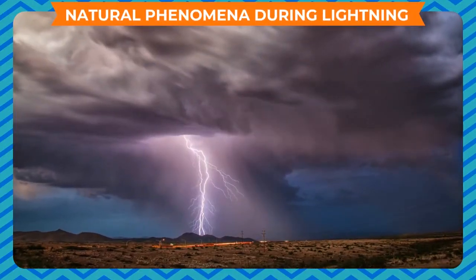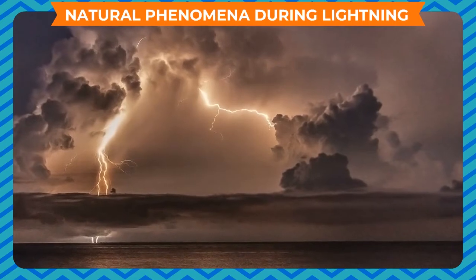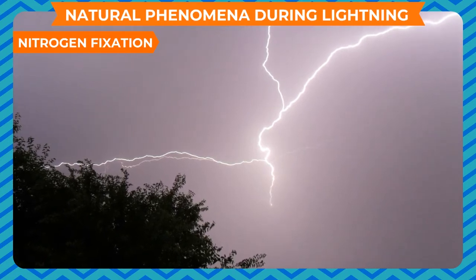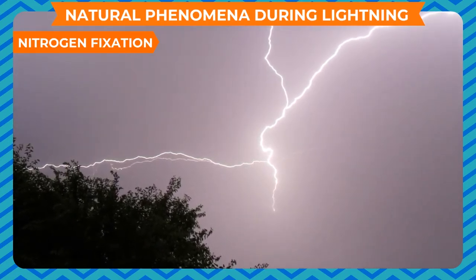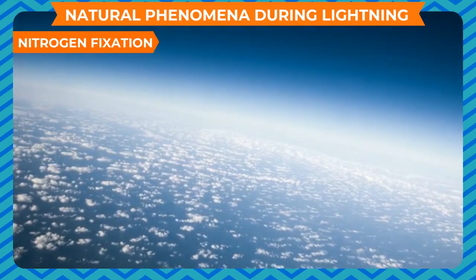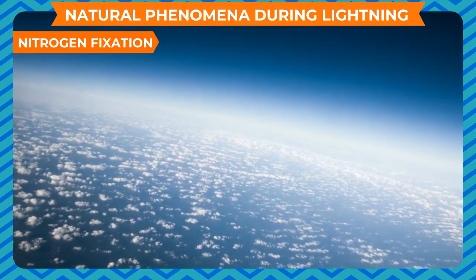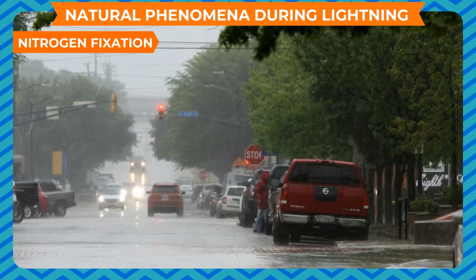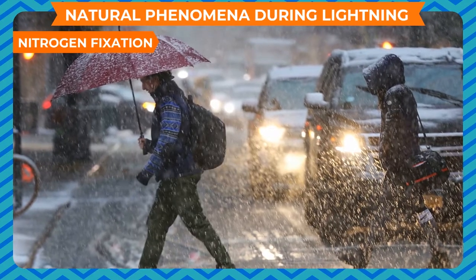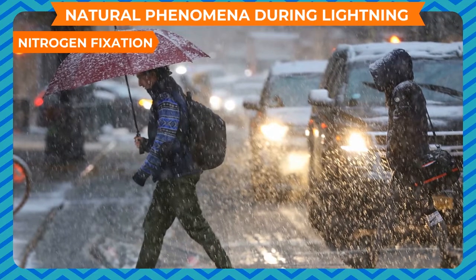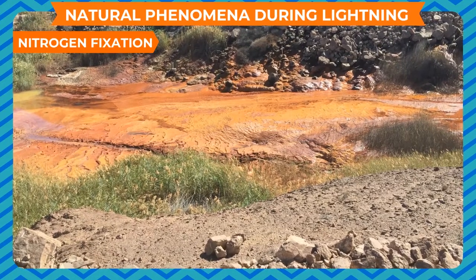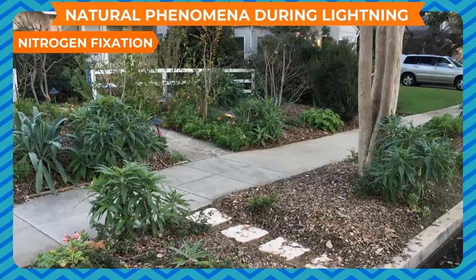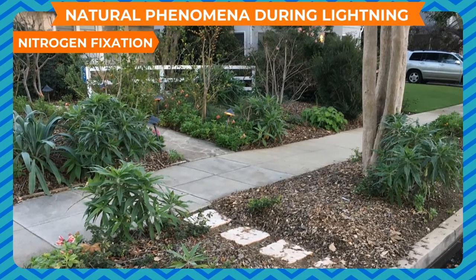Natural phenomena during lightning: Lightning gives rise to a number of natural phenomena. Due to the intense quantity of energy released during lightning, atmospheric nitrogen combines with atmospheric oxygen resulting in the formation of oxides of nitrogen. The oxide formed combines with falling rainwater to form nitric acid, which falls on the earth as acid rain. It then seeps into the earth and reacts with alkali present in the soil to form nitrates, which are then used by plants for their growth.